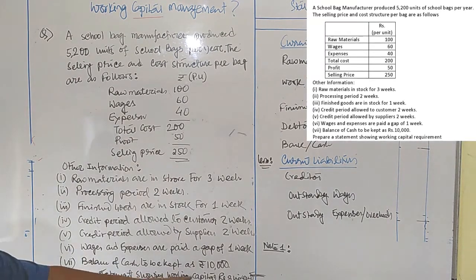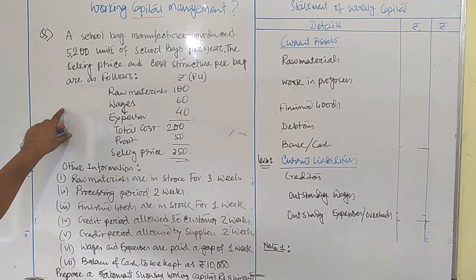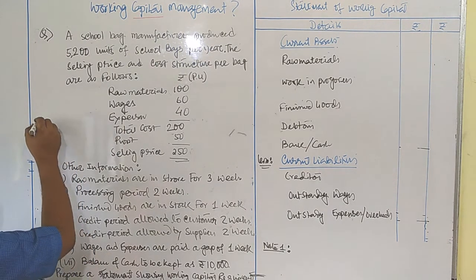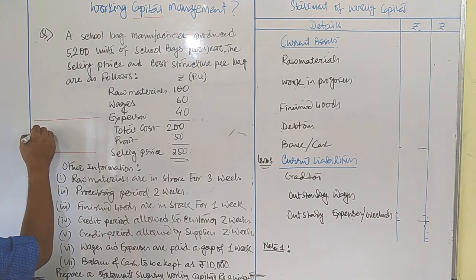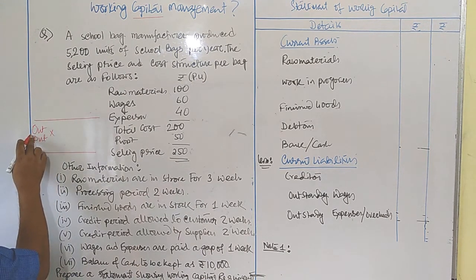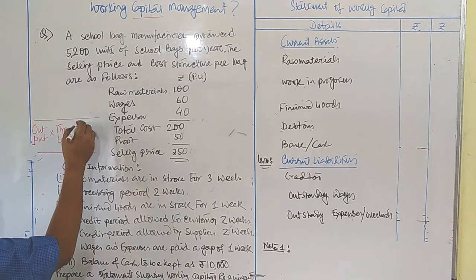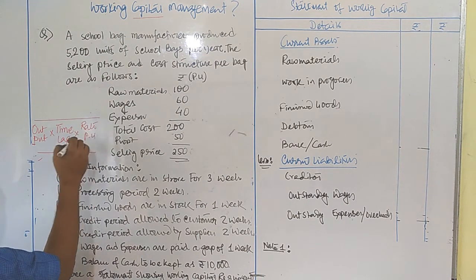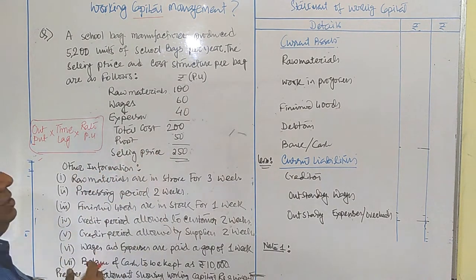We are going to prepare a statement of working capital requirement based on this question. Before starting, you should remember that there are three components which are very basic and essential for calculating working capital. The first is output, the second is time lag, and the final component is proportional cost — that is, rate per unit. If you multiply these three: volume, time lag, and rate per unit, you can easily get each and every component.